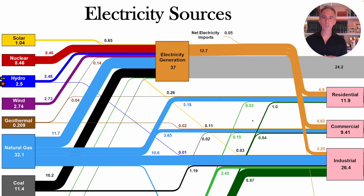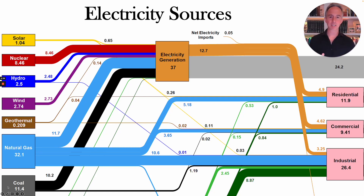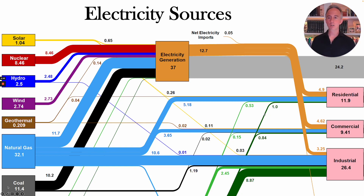As a reminder, we talked about this Sankey diagram earlier in class, showing on the left the sources of energy that enter into the electricity system to be turned into electricity. The biggest single source comes from natural gas. Coal is another important source. Wind, solar, and hydro are important, and nuclear is important as well.